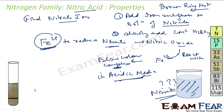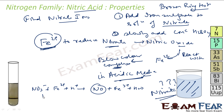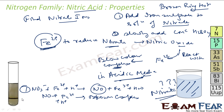The reactions are: NO₃⁻ + Fe²⁺ in H⁺ medium forms NO, Fe³⁺, and H₂O; then NO reacts again with Fe²⁺ to form the brown complex in acidic medium. This is a very famous test — the brown ring test — to find nitrate ions.